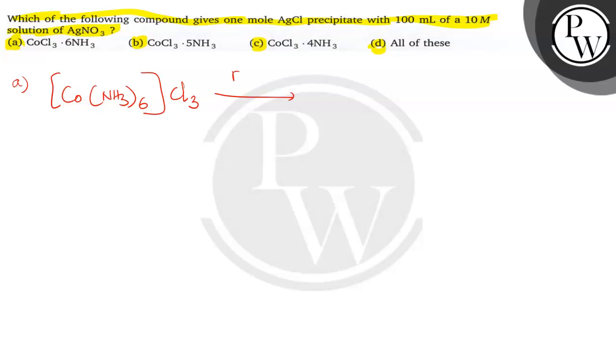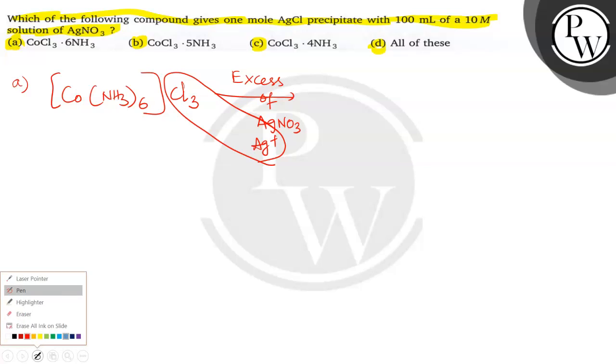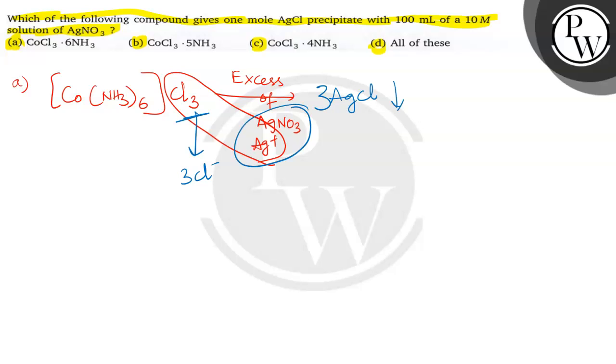This one reacts with excess AgNO3. If AgNO3 is in excess, we have more Ag+ ions that combine with the Cl- ions and form AgCl, which is a white colored precipitate. As 3 Cl- ions undergo ionization, we are getting 3 moles of AgCl because AgNO3 is taken as excess.